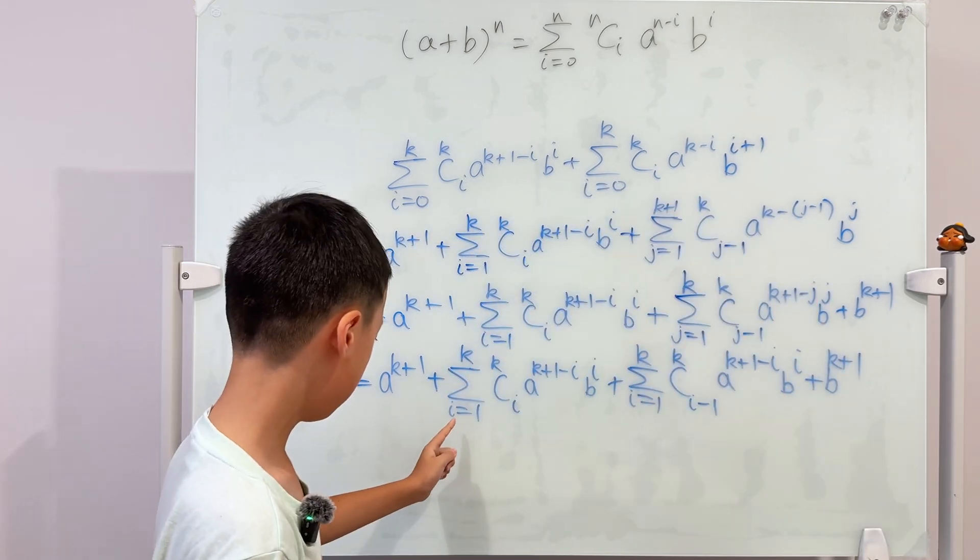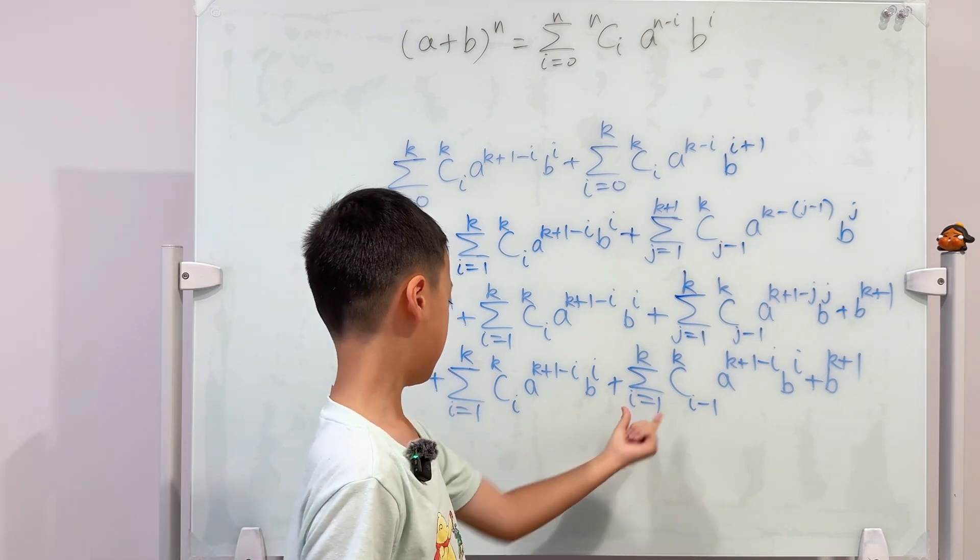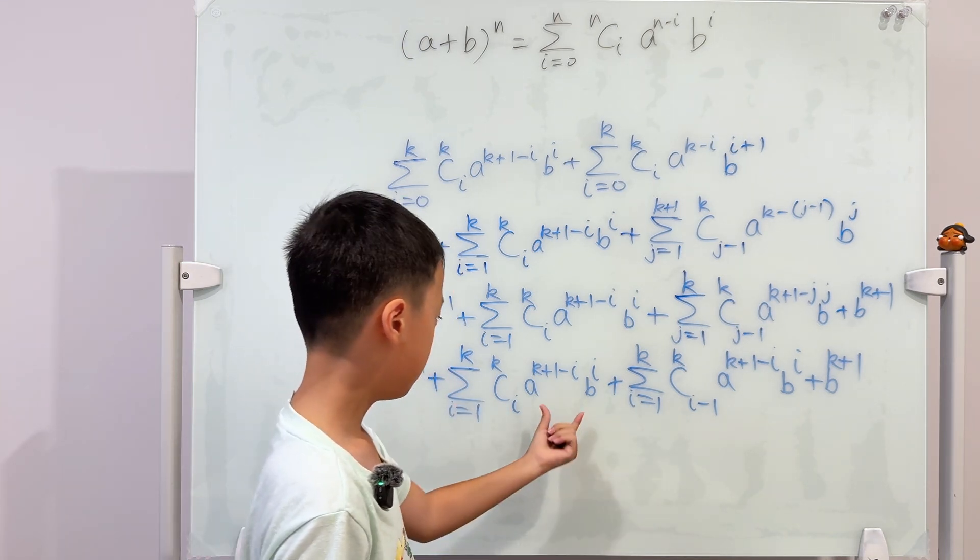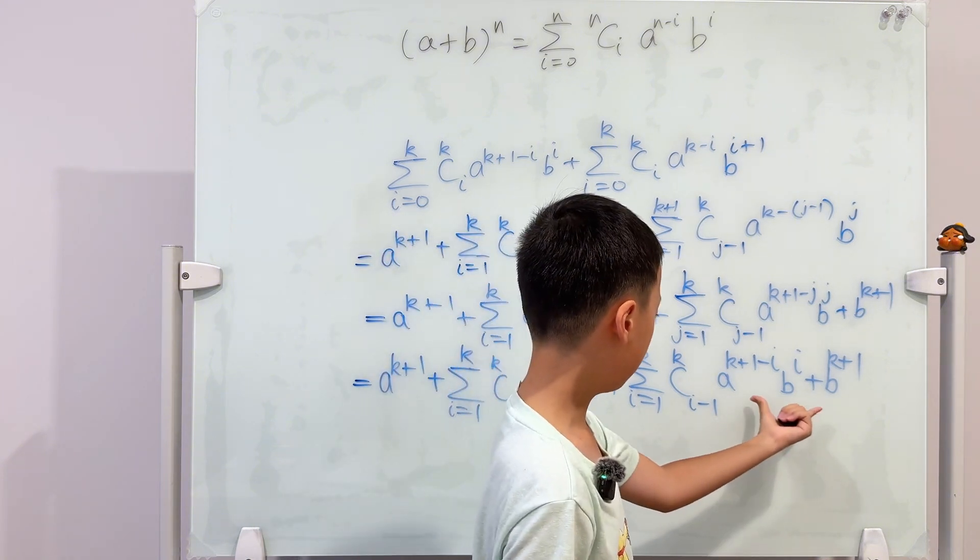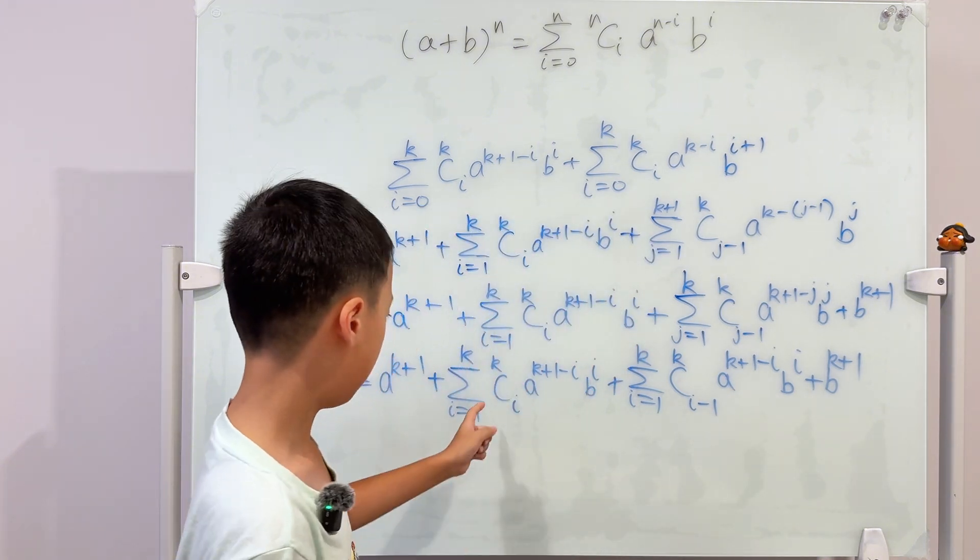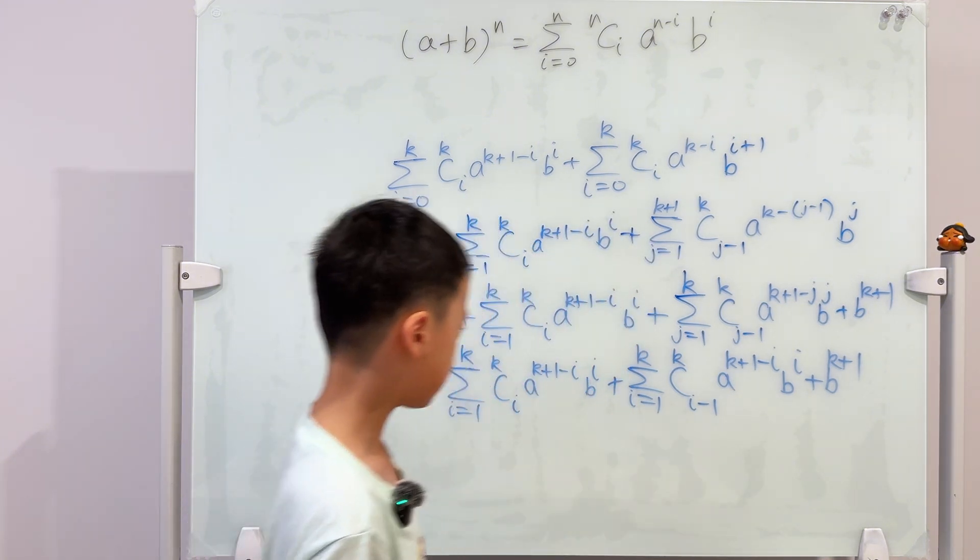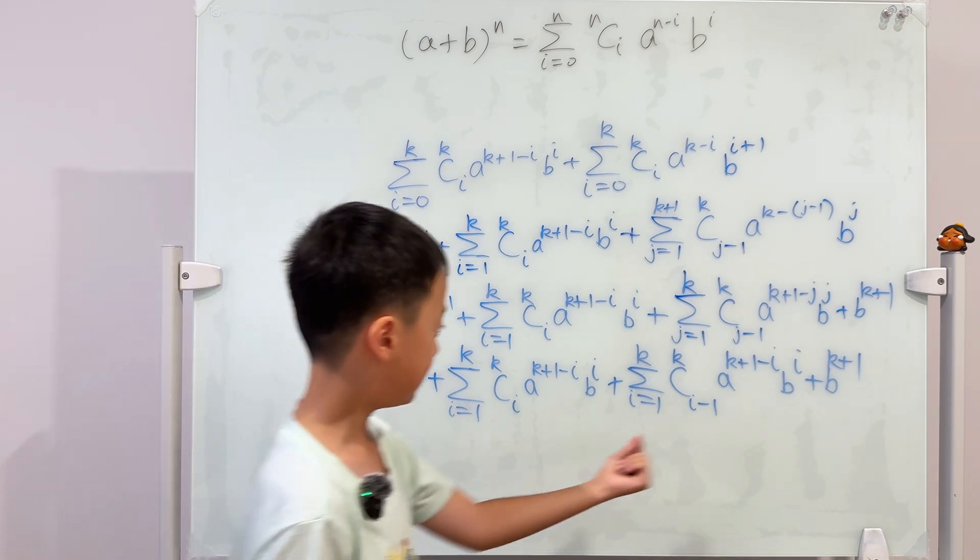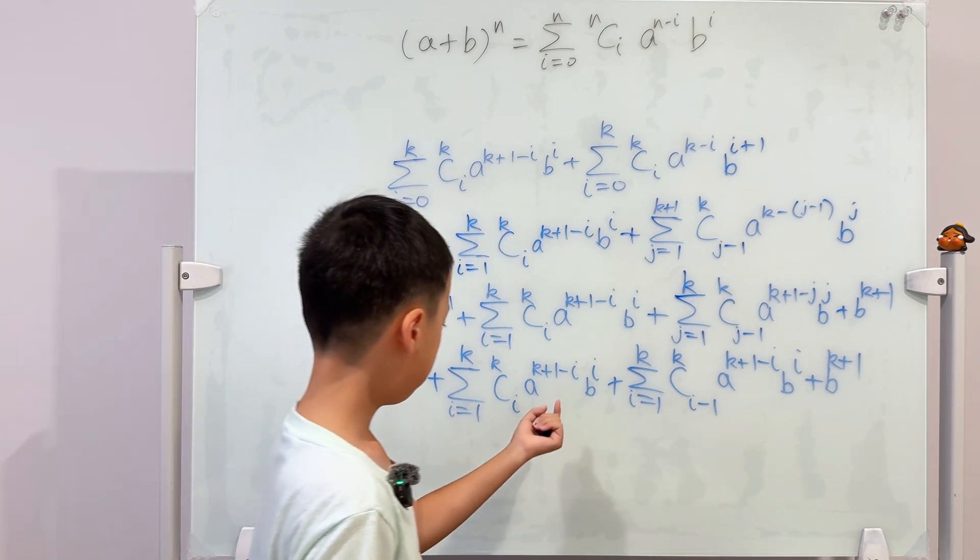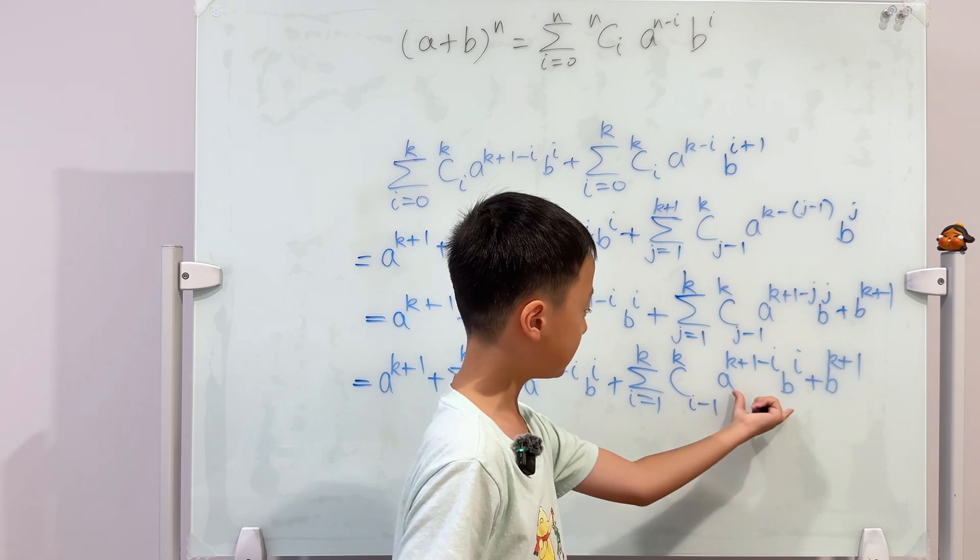You see, this sum and this sum is the same. And look, the input is also the same, but then the only difference is the c's. So then why don't we add these two sums together, but just take out this term.